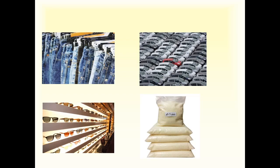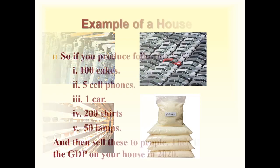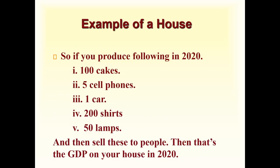For example, China produces a lot of goods. Whatever China produces within its boundaries in a specific year — say 2019 — is all included in China's GDP. Similarly, whatever the United States, Pakistan, or India produces within its boundaries in a specific year — cars, jeans, shirts, water bottles, plastic cups, lunchboxes — all of that is included in their respective GDPs.